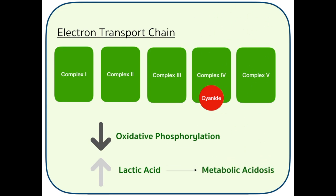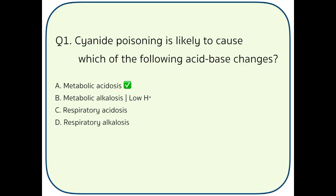Metabolic alkalosis is seen when there's a loss of hydrogen ions. Respiratory acidosis is seen in hypoventilation as carbon dioxide builds up in the body. Respiratory alkalosis is seen in hyperventilation.